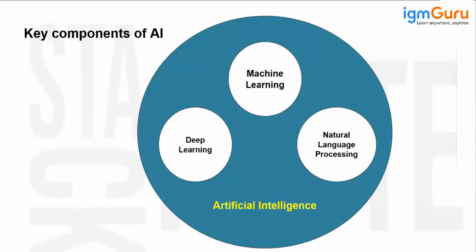Let's talk about the different components in AI. AI is kind of a superset — a branch — and inside this AI we have machine learning. If you are a data scientist you've already heard about machine learning. We also have deep learning, natural language processing, and reinforcement learning. These are the different fields of AI.